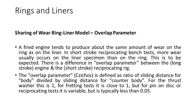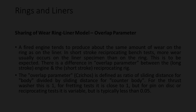There is a difference in the overlap parameter between the long-stroke engine and short-stroke reciprocating rig. The overlap parameter χ is defined as the ratio of sliding distance for the body divided by sliding distance for the counter body. For the thrust washer this is 1; for fretting tests it is close to 1; but for pin-on-disc or reciprocating tests it is variable, but typically less than 0.05.